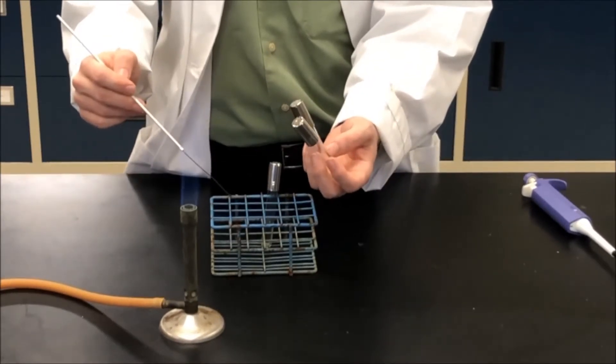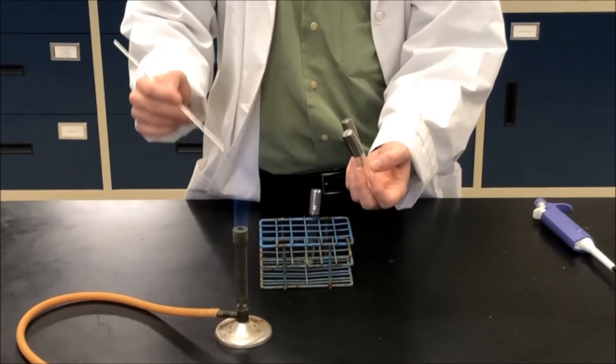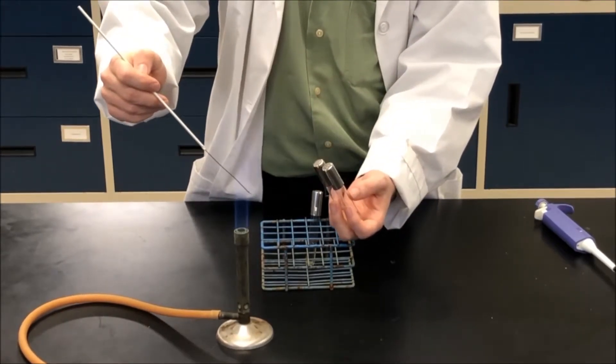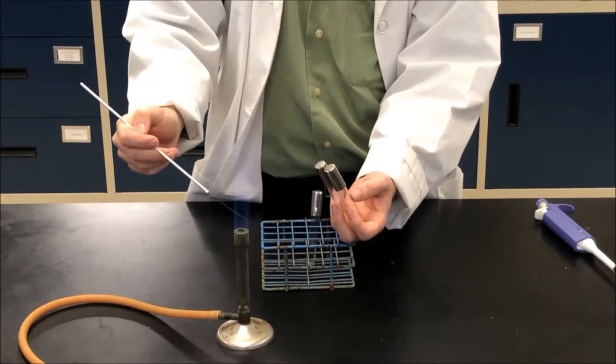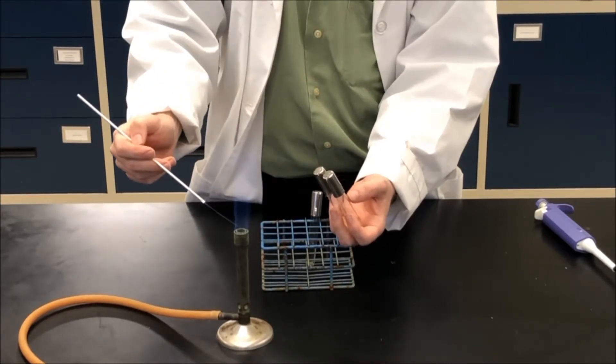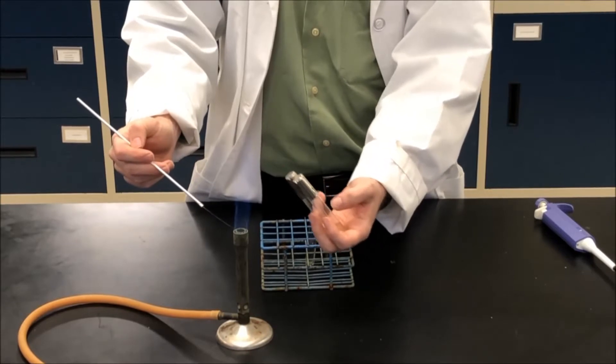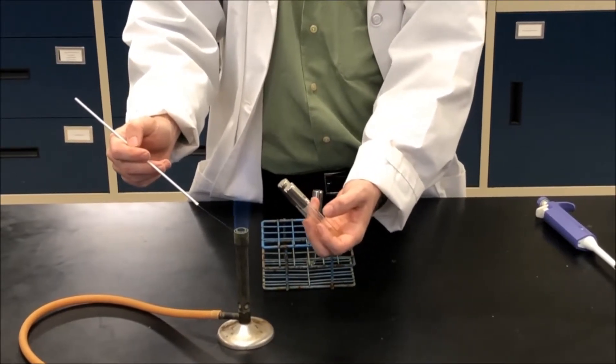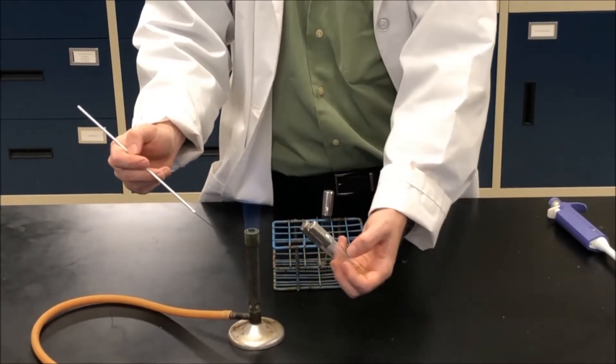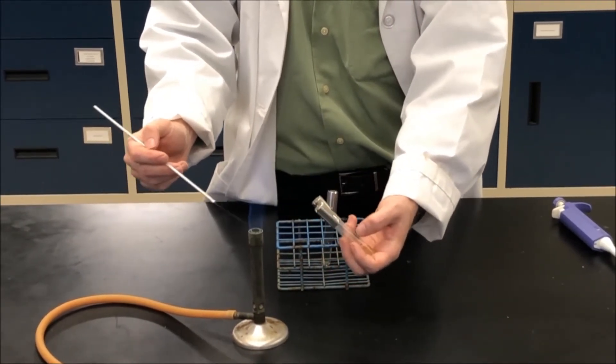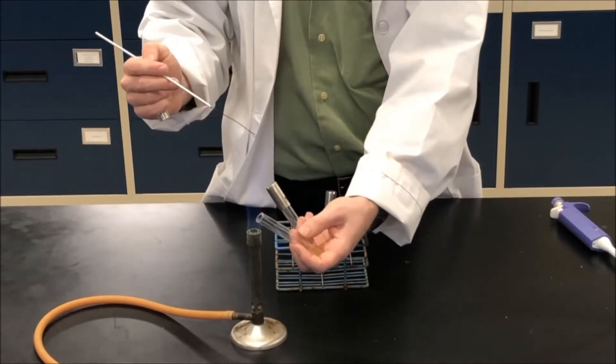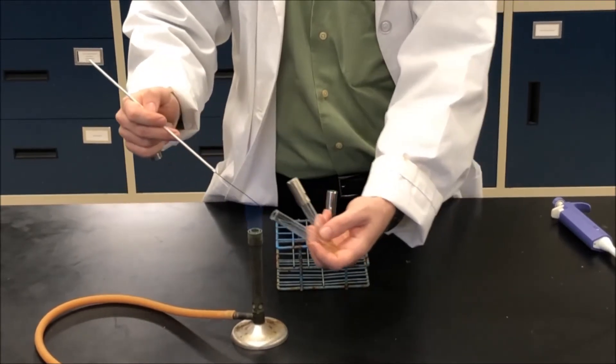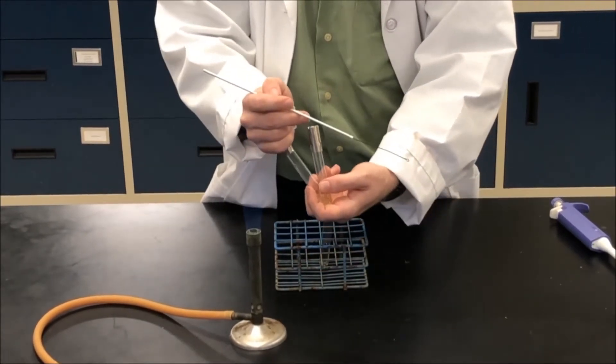We'll do that one more time. So we flame my loop, allow it to cool. Notice that I'm always staying as close as possible to the Bunsen burner because of aseptic technique. So this around my Bunsen burner is going to be my sterile field. Open up the bacteria culture, flame, get a sample, flame, close.